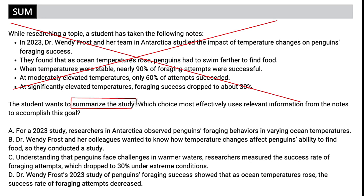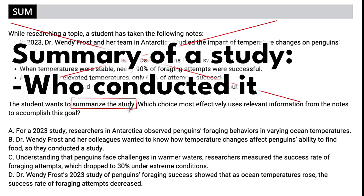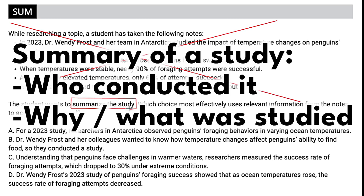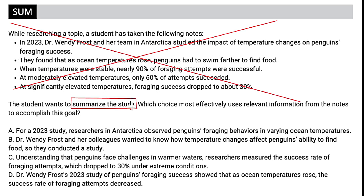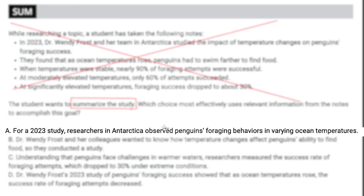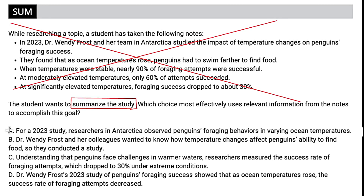Seems simple enough, but we need to consider what we're looking for in a summary. Before we go through to eliminate: a summary of a study is going to tell us very briefly who conducted the study, why the study was conducted, and the results of the study. Choice A gives us the study and researchers in Antarctica observing penguins, but what we don't get is a result. Since we're missing a result, I'm going to get rid of A.